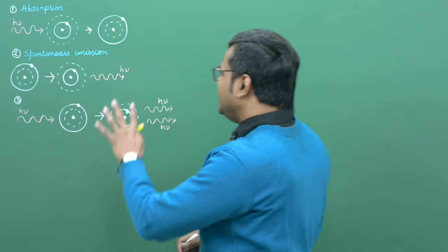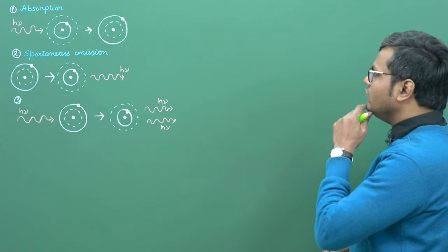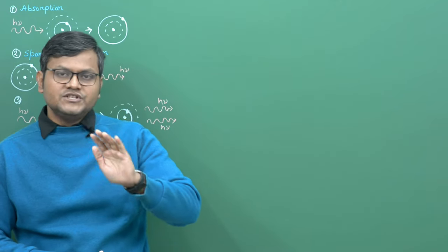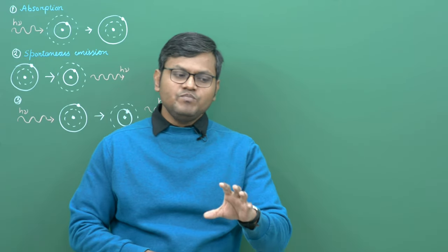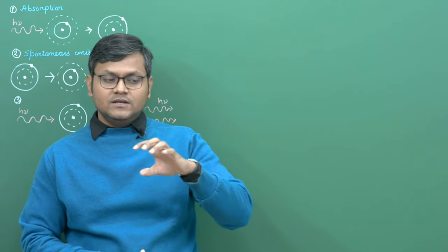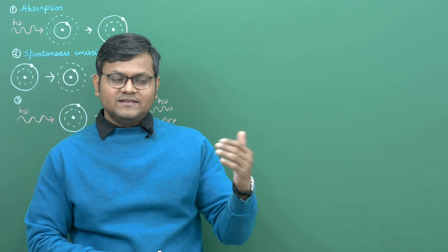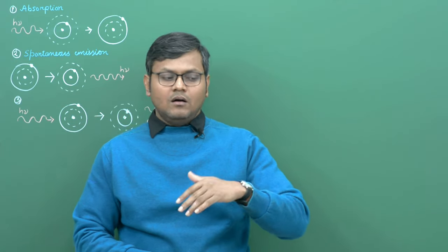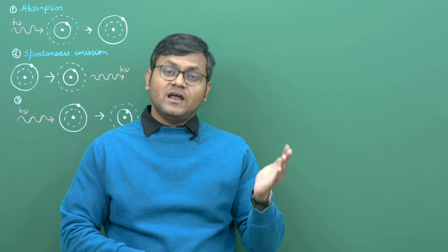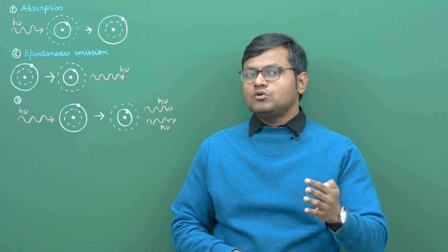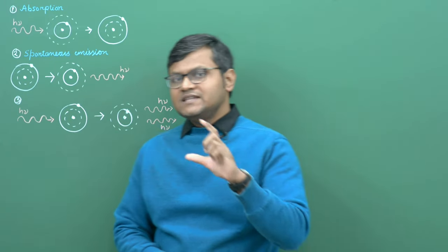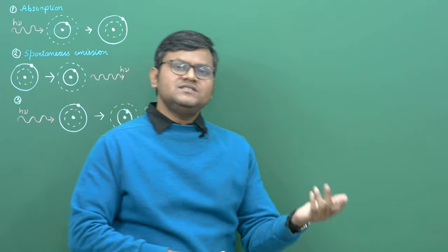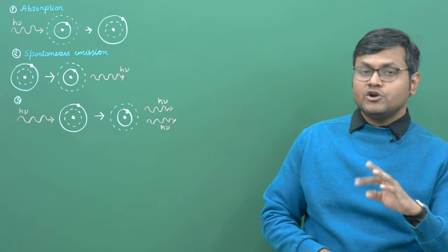Here we have various kinds of atomic transitions involving emission or absorption of radiation. In previous lectures, we talked about the structure of the atom. We saw that the atom has discrete energy levels, and the atom can make transitions from one energy level to another, which is associated with either an absorption or emission of a photon of sufficient frequency. These kinds of discrete energy levels are associated with discrete transitions involving emission or absorption of photons.